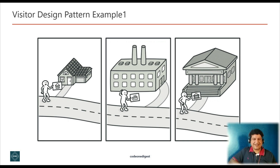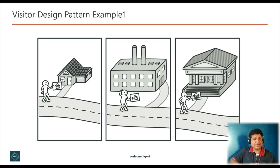Let's understand visitor design pattern with a real-world example. Imagine a seasoned insurance agent who is eager to get new customers. He can visit every building in the neighborhood and try to sell insurance to everyone he meets. Depending on the type of organization that occupies the building, he can offer specialized insurance policies — for example, if it is a residential building he sells medical insurance, if it is a bank he sells theft insurance.